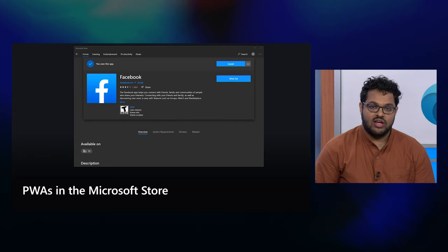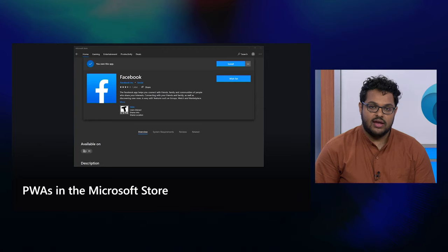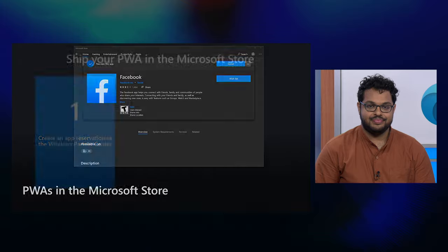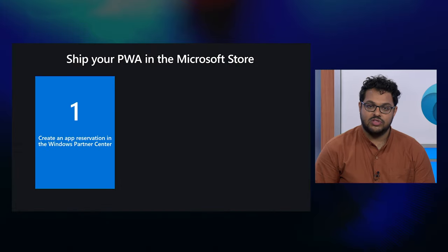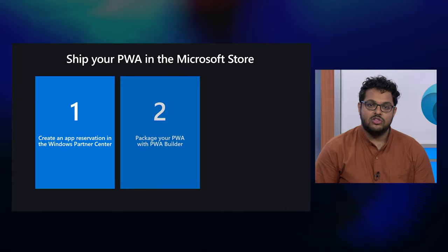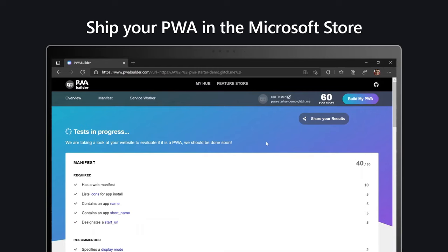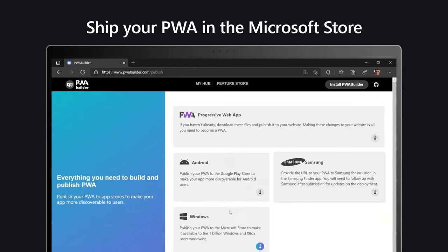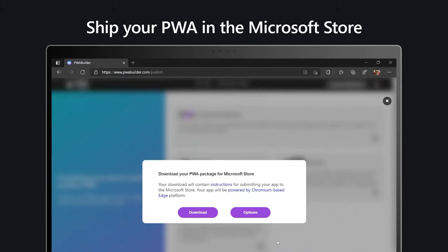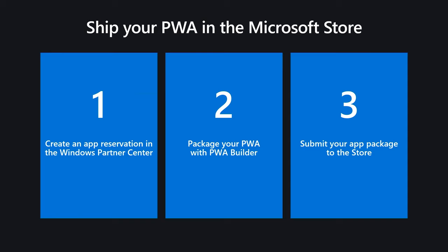Many users also find apps in the Microsoft Store, and we don't want users to have to think about the distinction between web and native apps. With the Microsoft Store, you can reach over a billion Windows 10 users. Shipping your PWA in the Microsoft Store can be done in just three simple steps: create an app reservation in the Windows Partner Center, then use PWA Builder to package your PWA. Navigate to pwabuilder.com, enter the URL for your app, and PWA Builder runs tests to make sure your app can be installed, has offline capabilities, a manifest, and so on. Then take the downloaded .zip and submit that app package to the store.